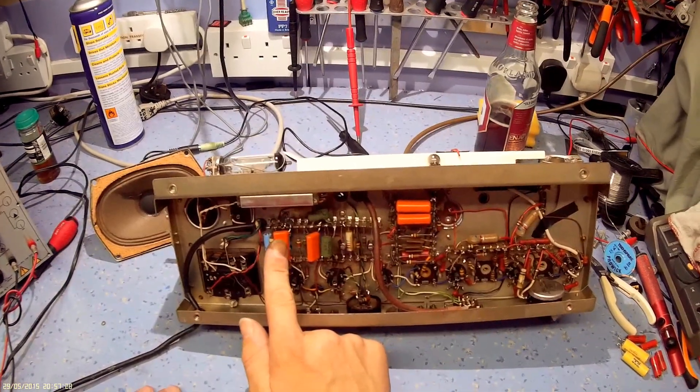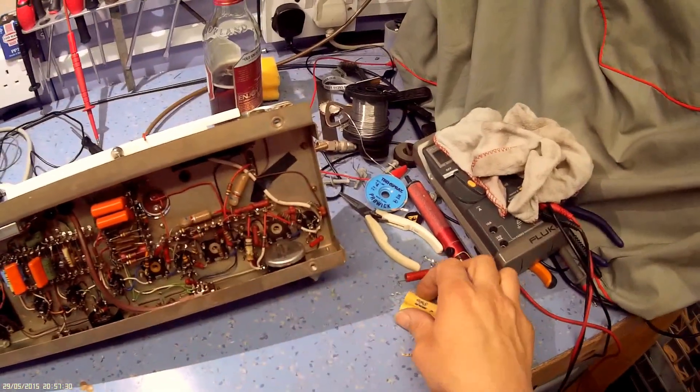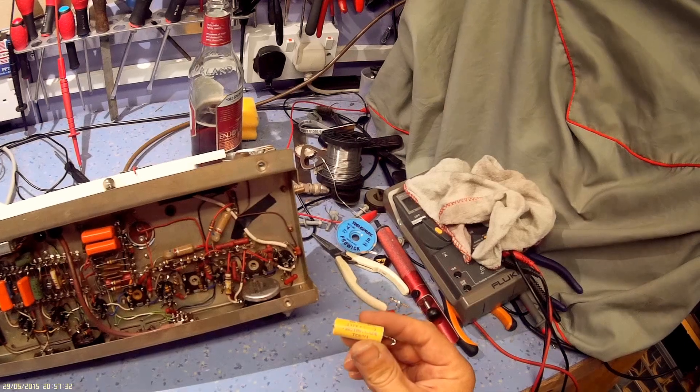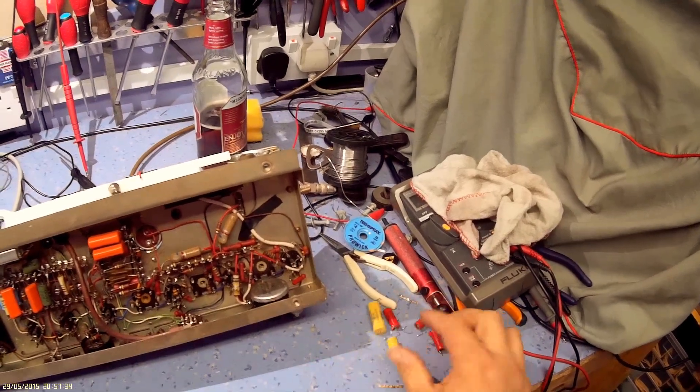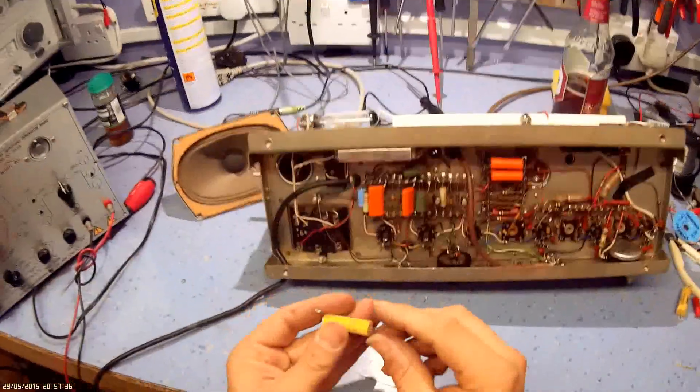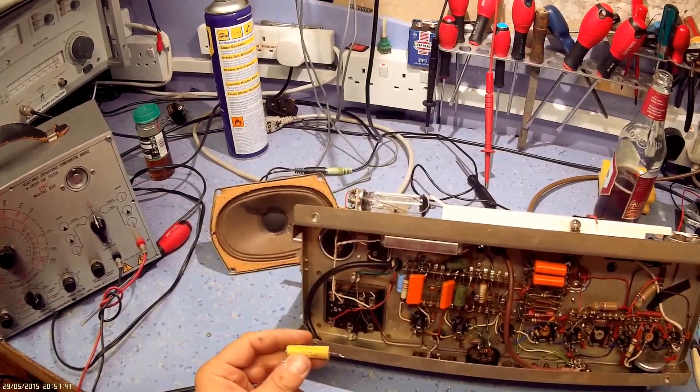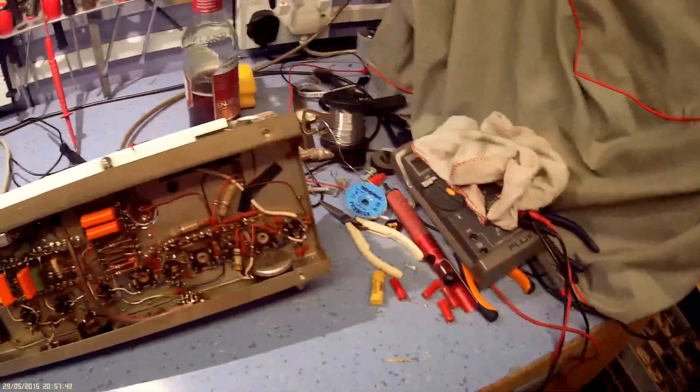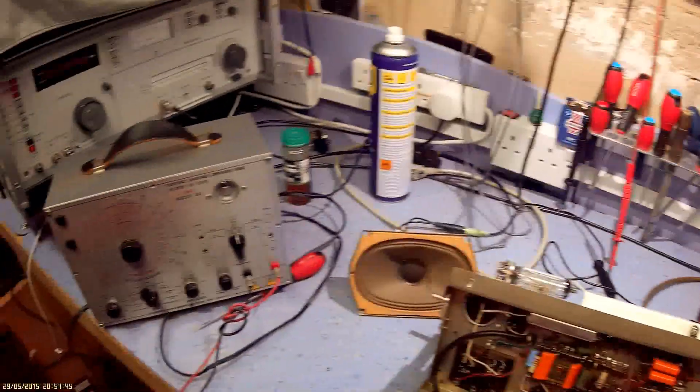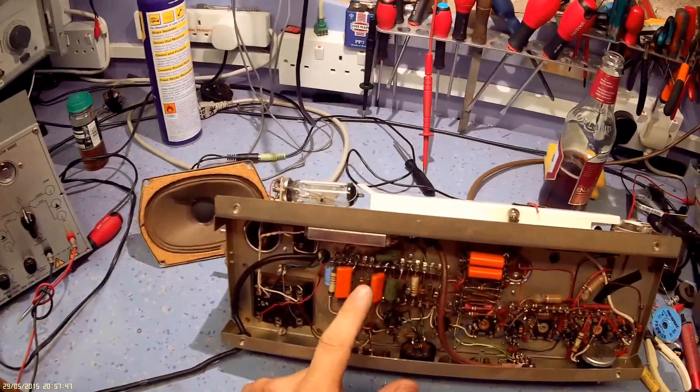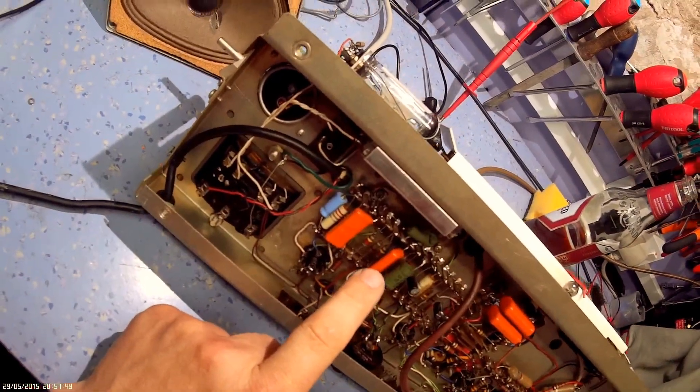These are the bypass capacitors. Now, these are not the right value. I've got to get the right value. But these are, it's one of these. There's two of these and they are 0.005. So it's actually a 47,000 picofarad capacitor I need. So I need to get something like that. At the moment, I've got, what are these? These are point, what's that?